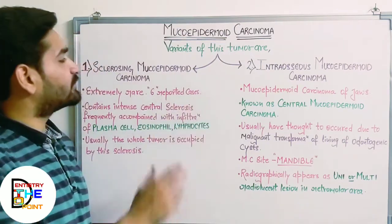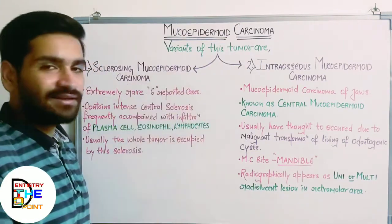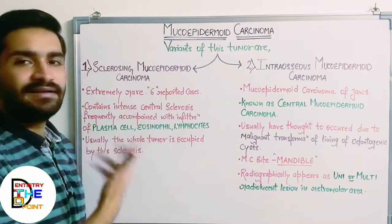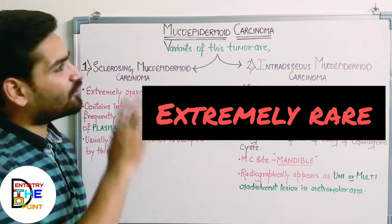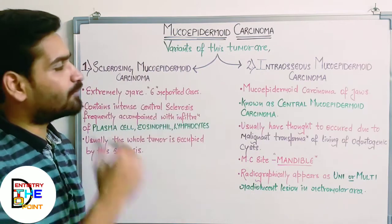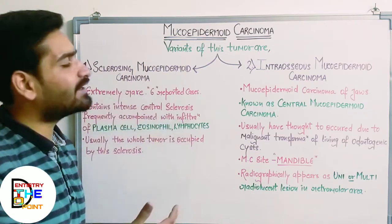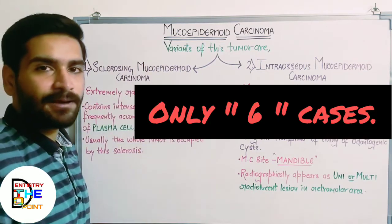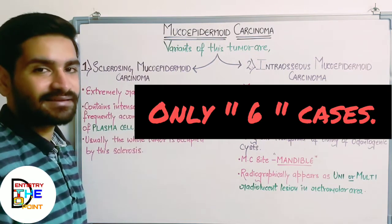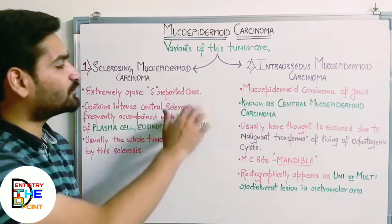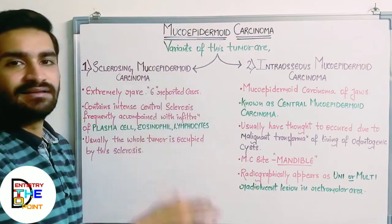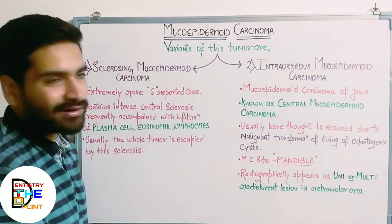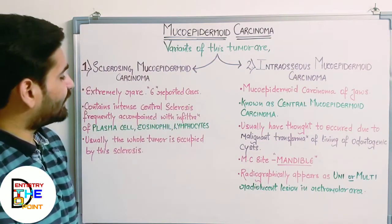Starting with sclerosing mucoepidermoid carcinoma: it is an extremely rare variant of mucoepidermoid carcinoma. Only six cases have been reported, so you can consider this the rarest of all variants of mucoepidermoid carcinoma.